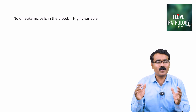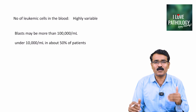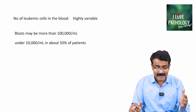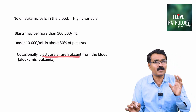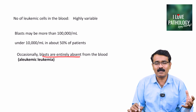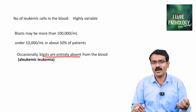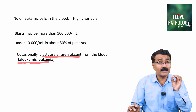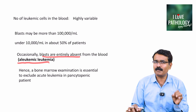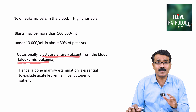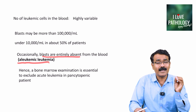The number of leukemic cells in the blood is highly variable depending on the patient and type of leukemia. Usually it will be more than 1 lakh, but in around 50% of patients, blast cells are less than 10,000 per cubic mm of blood. Very occasionally, blasts can be entirely absent from the peripheral smear even though the patient has all the manifestations — bone marrow will show increased blasts. This is called aleukemic leukemia. This is why bone marrow examination is extremely important in pancytopenia — just because you have pancytopenia does not rule out leukemia.